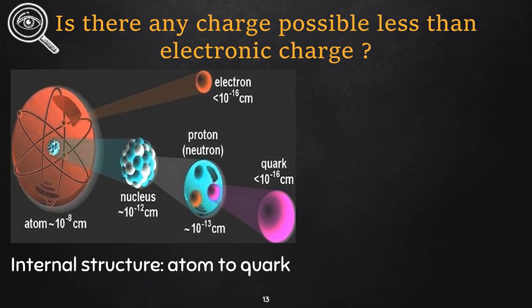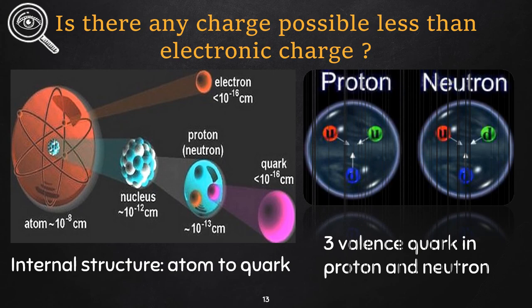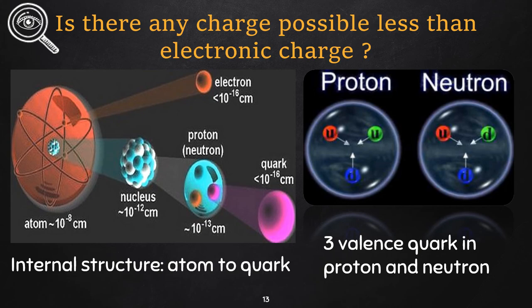Now most tiny charge is negative one-third of electronic charge and possessed by down quark. Up quark has positive two-thirds charge of electron. From the picture of proton, you can see three valence quarks - that is two up and one down quark in the proton, which makes the charge of proton positive one. And there is one up quark and two down quarks that make the charge of the neutron as zero.